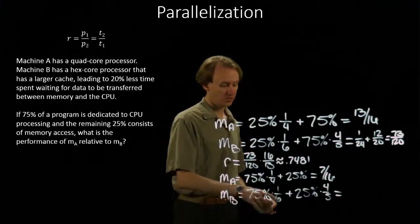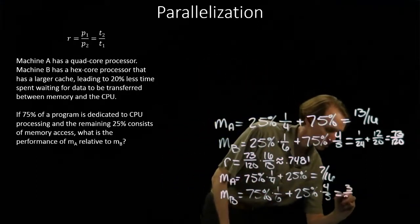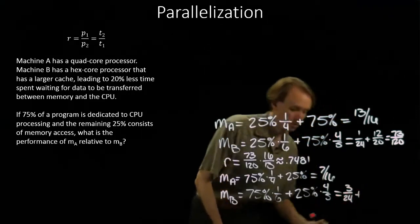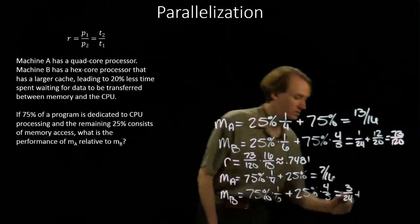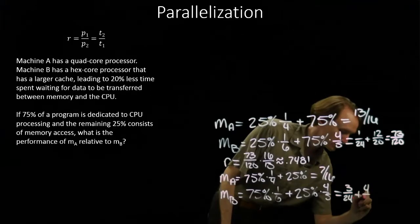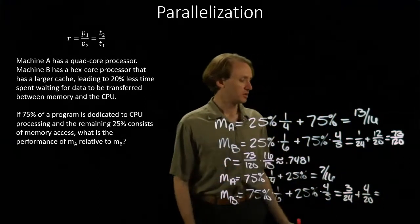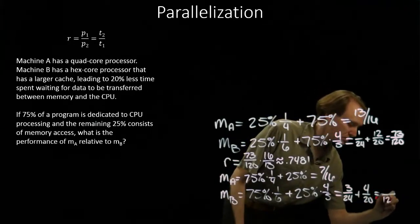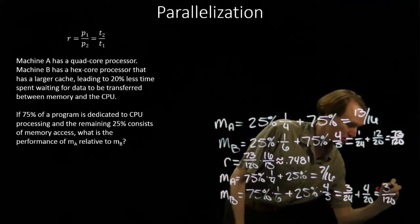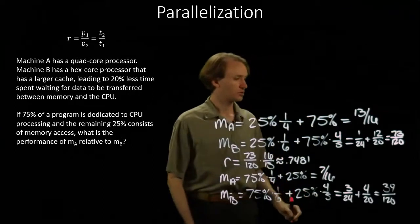So now I have three twenty-fourths and four-twentieths. And again, our common denominator will be one-hundred-twenty. And we'll get thirty-nine over one-hundred-twenty.